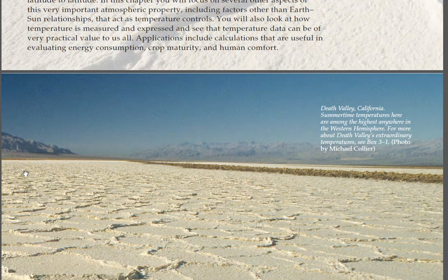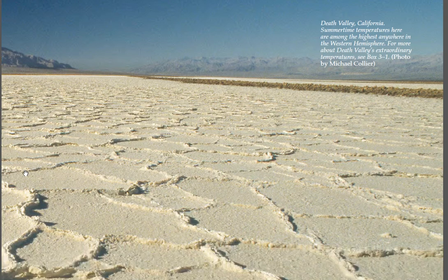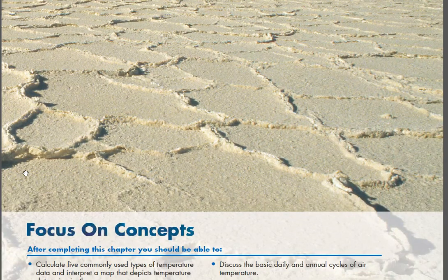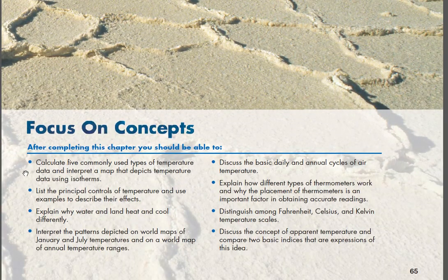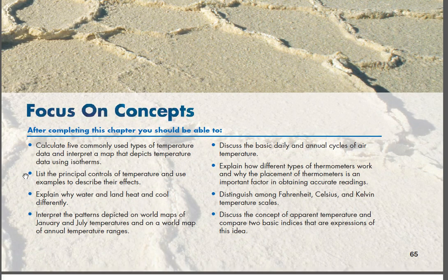Focus on concepts. After completing this chapter you should be able to: calculate five commonly used types of temperature data and interpret a map that depicts temperature data using isotherms; list the principal controls of temperature and use examples to describe their effects; explain why water and land heat and cool differently; and interpret the patterns depicted on world maps of January and July temperatures and on a world map of annual temperature ranges.